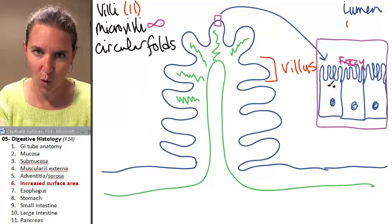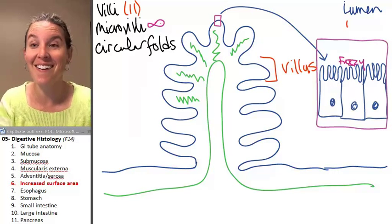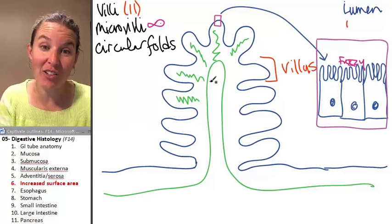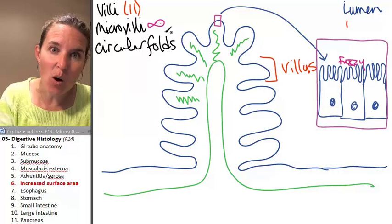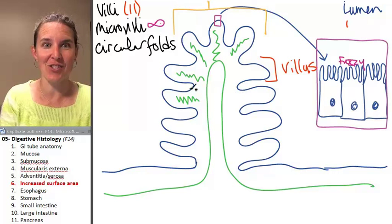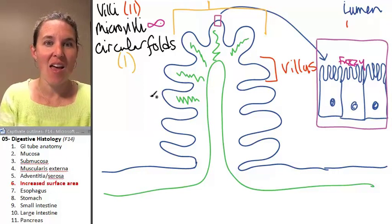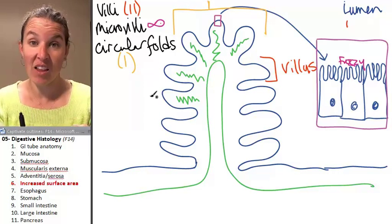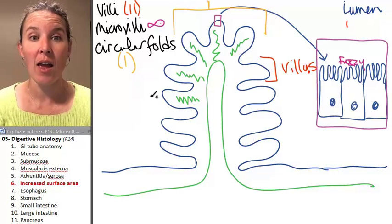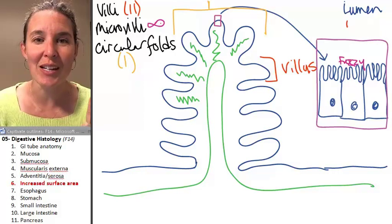What's the circular fold? Indeed, look, we'll make the circular fold this color. This whole thing is one circular fold. There are 11 villi, there are a billion microvilli, and there's one circular fold in this picture.